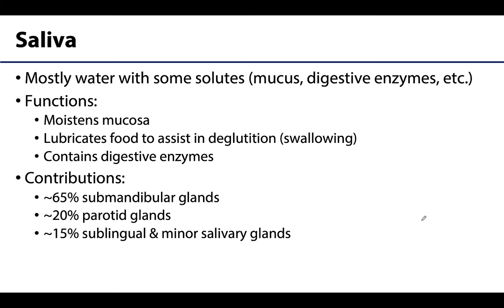So what is saliva? It is basically just serous fluid with a little bit of mucus and some digestive enzymes. Saliva is hugely important in the maintenance of oral health, and decreased secretion from these salivary glands can result in increased incidence of oral conditions such as periodontal disease, dental caries, or infections. It's also very important for lubrication to assist in swallowing as well as moistening the oral cavity.